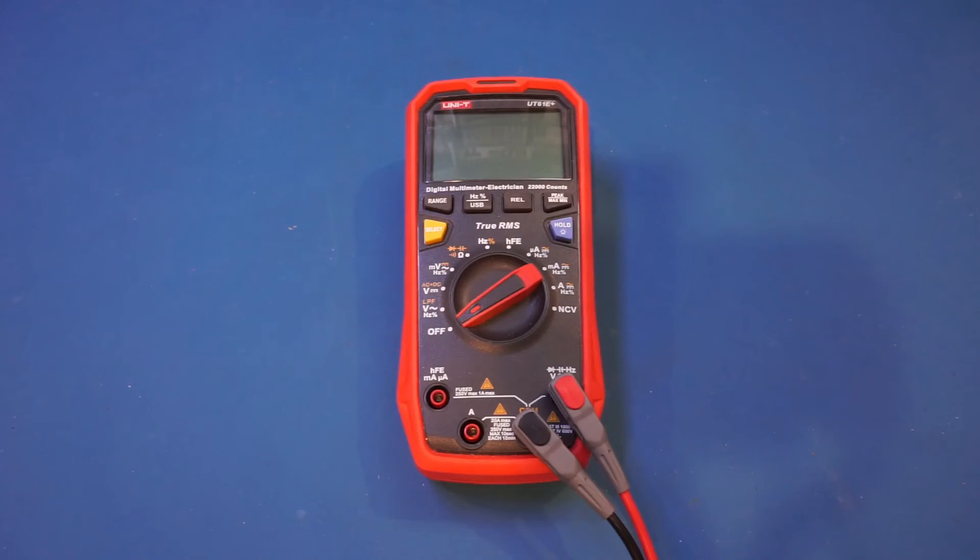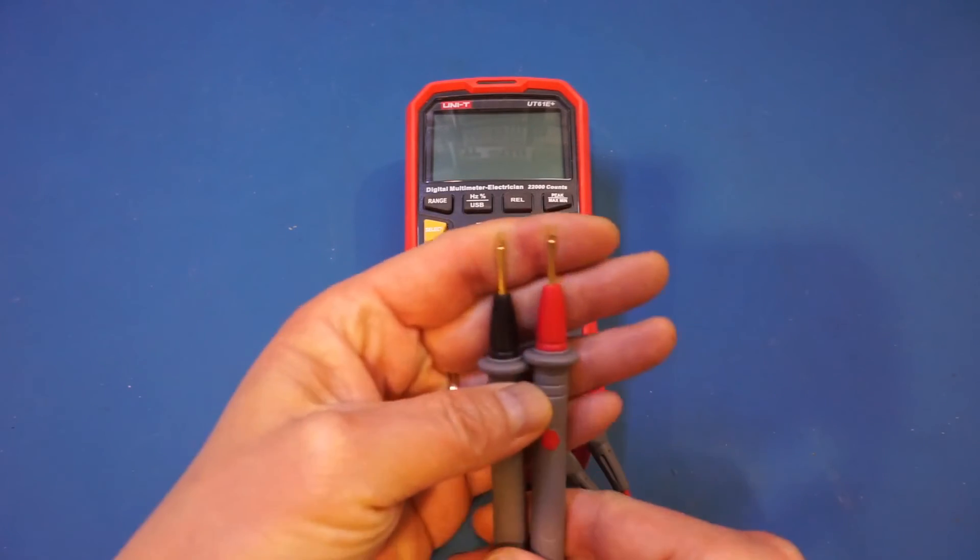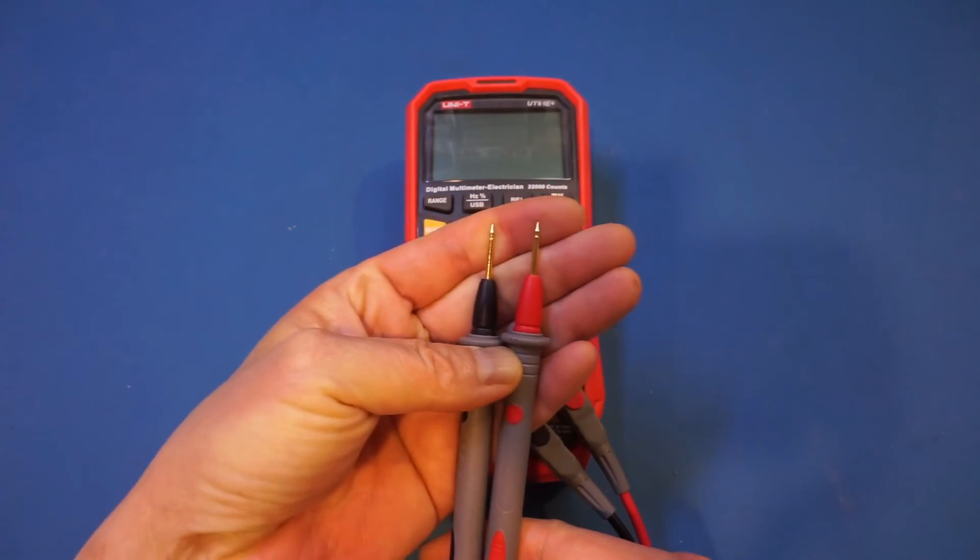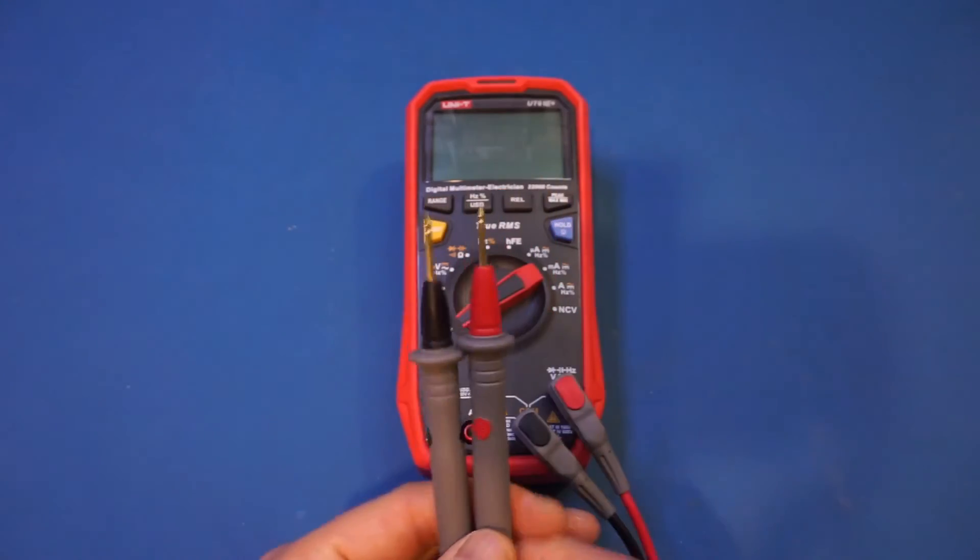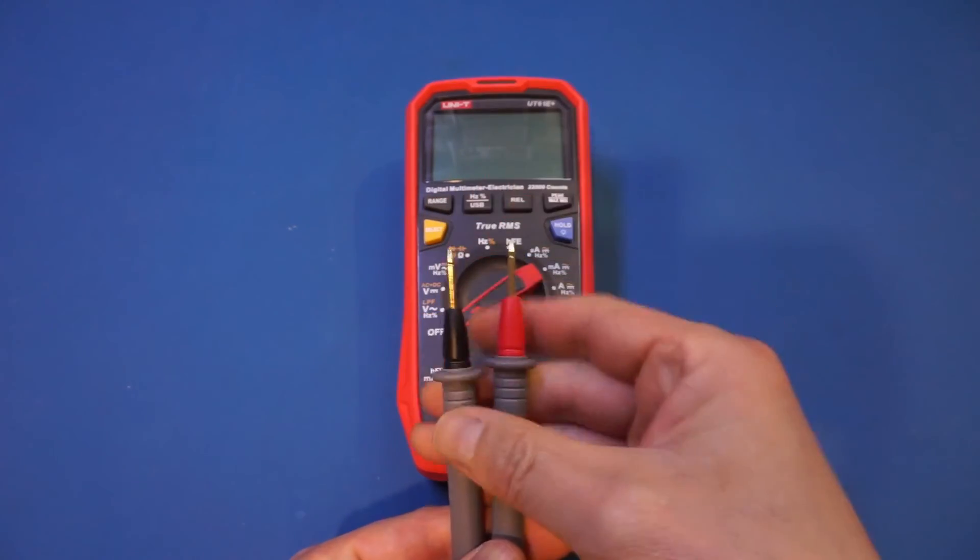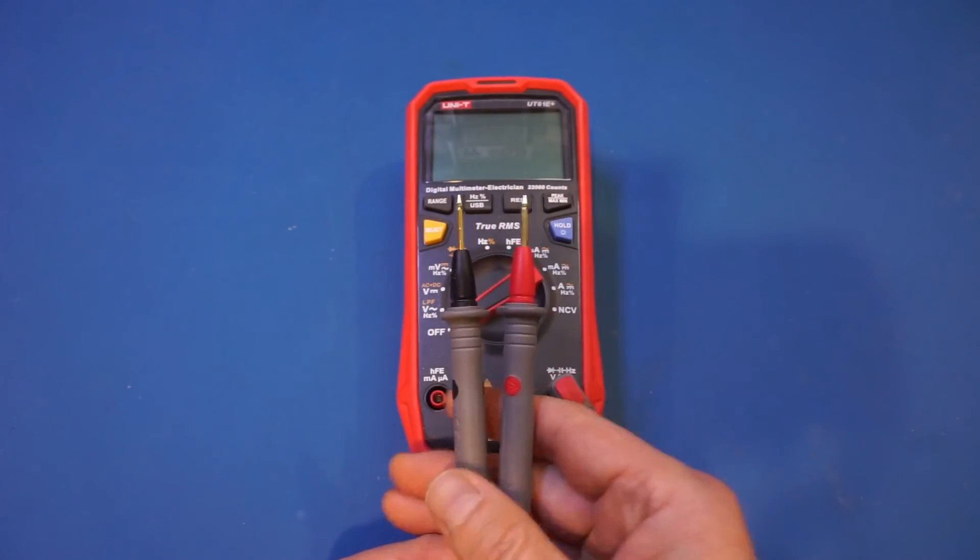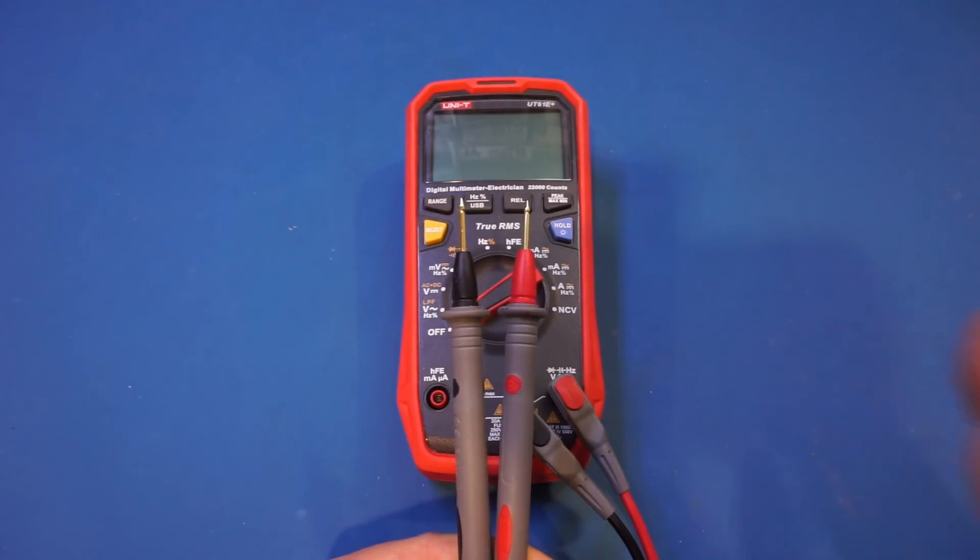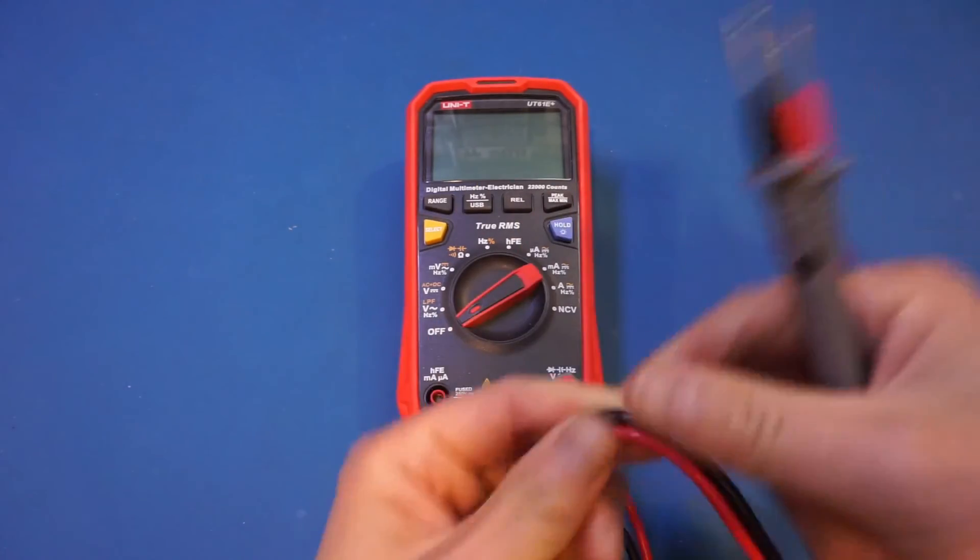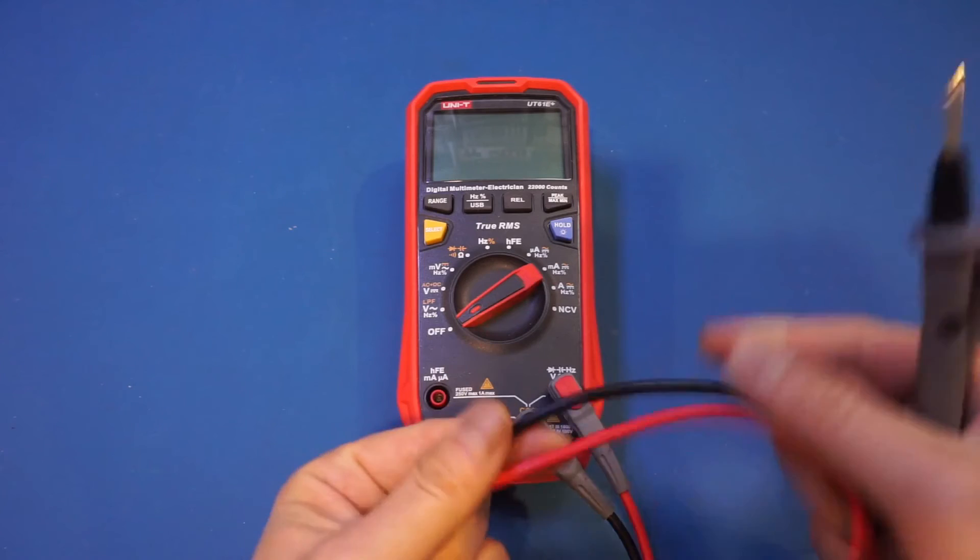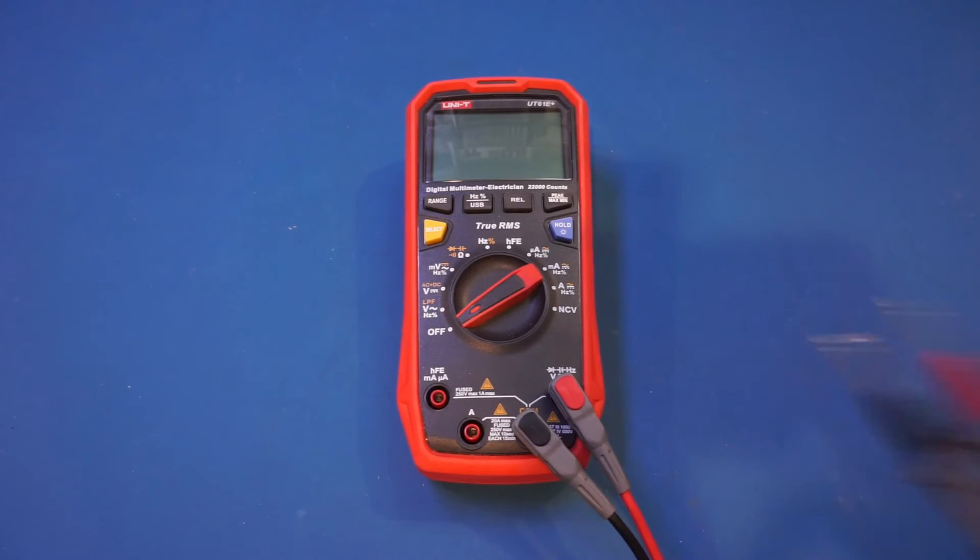Next, I want to talk about the supplied probes. These probes are gold-plated, as you can see here. They are sharp, but not too sharp. If you have used Probe Master probes, you will know what I'm talking about by too sharp. The wires though could be a little bit softer, but other than that, the probes work just fine.